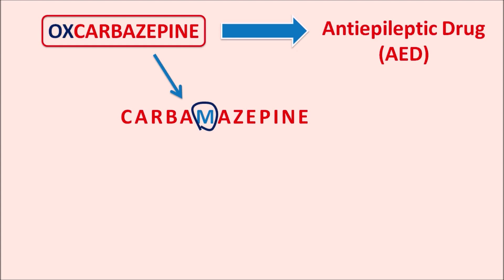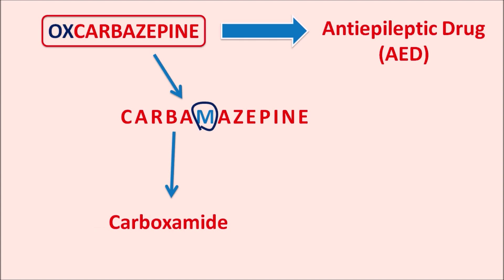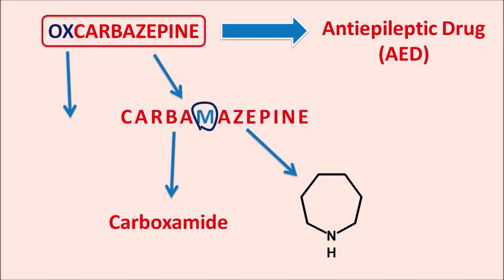Within the name of this drug we can identify two structural features. The prefix 'carbam' indicates this drug has the carboxamide functional group, and the suffix 'azepine' indicates this drug has a seven-membered heterocyclic ring system with one nitrogen. The prefix 'ox' indicates this drug has an oxo group — that means it has a keto group in addition to carbamazepine.